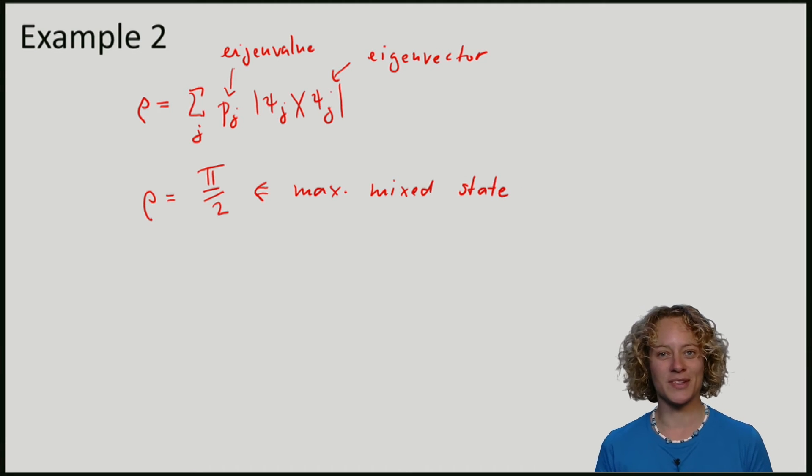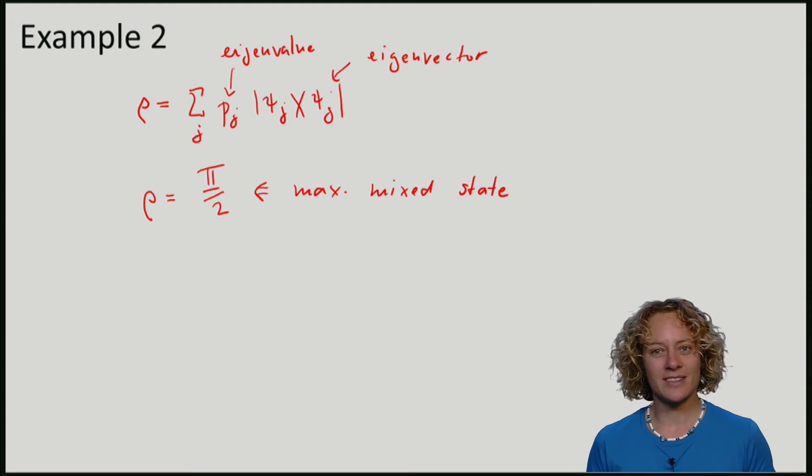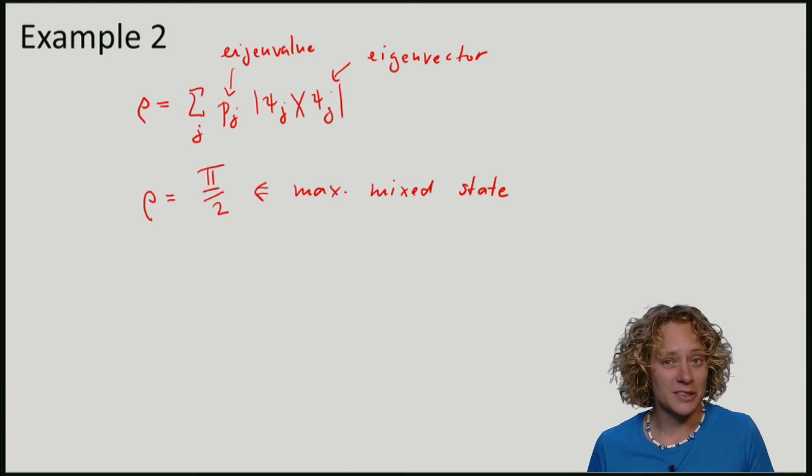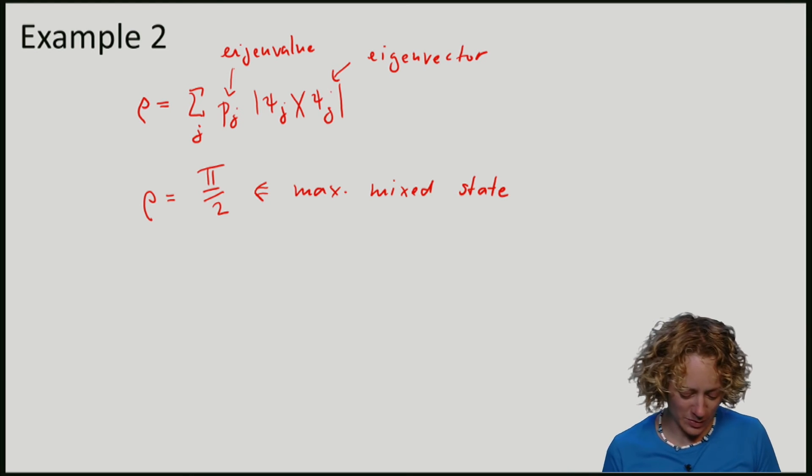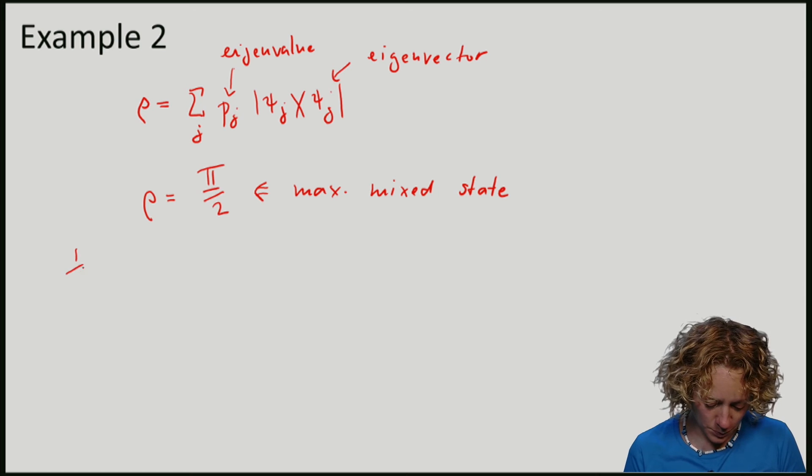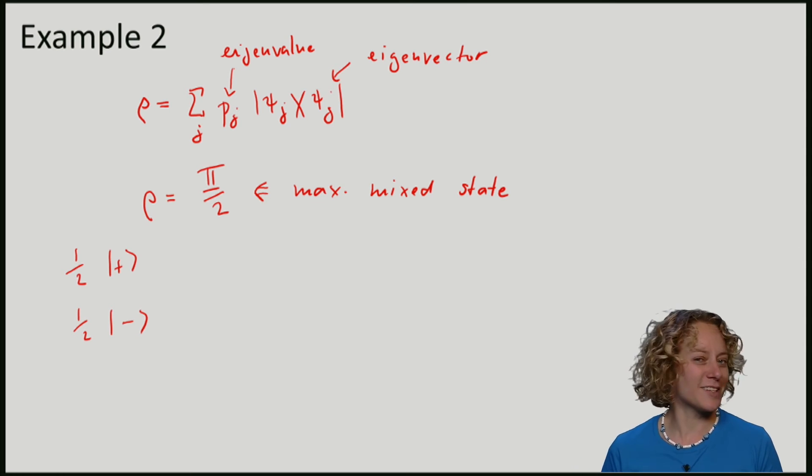The answer to this turns out to be no. And one way to see this, note that any state is an eigenstate of the identity matrix. Another way to see this is to consider another process that with probability half prepares the plus state.